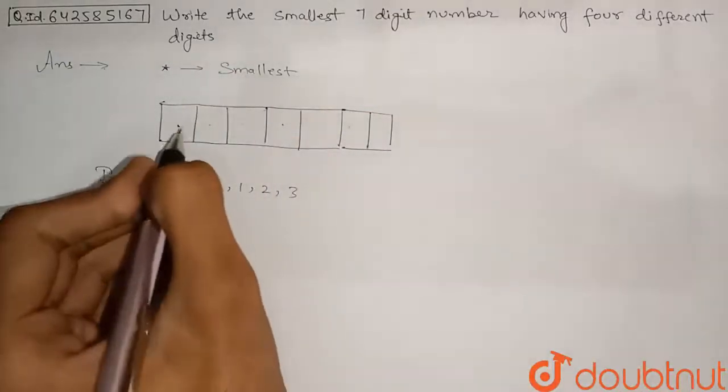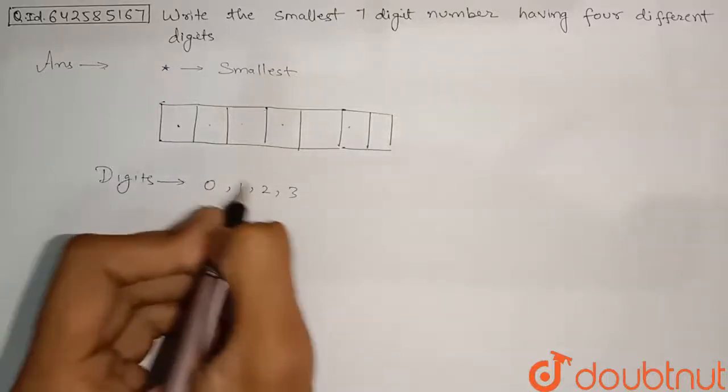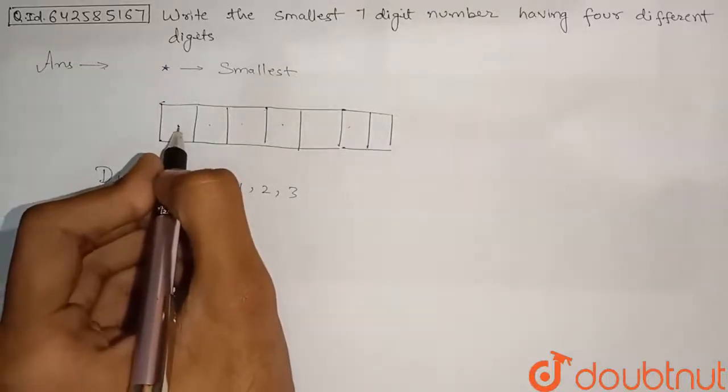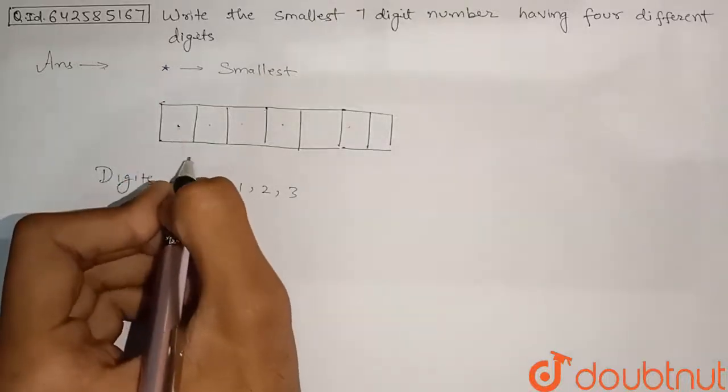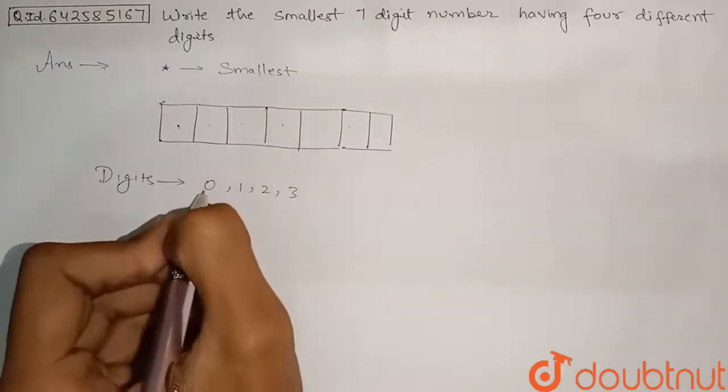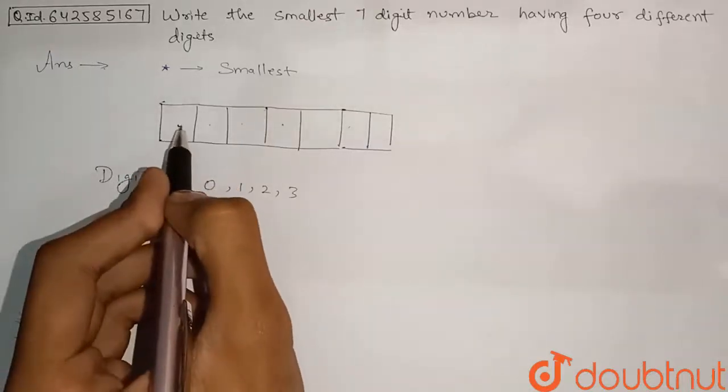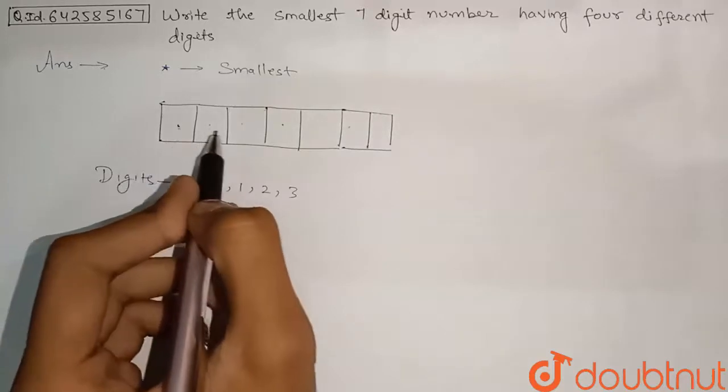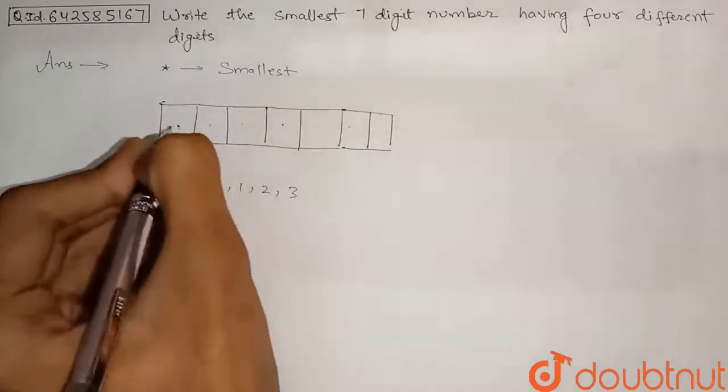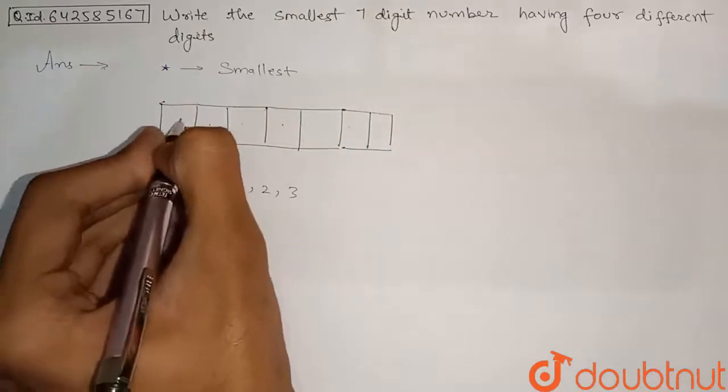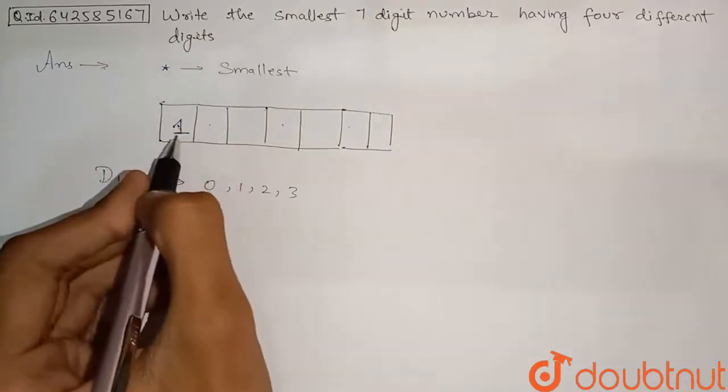Now we have to just put a digit out of these 4 digits into this first block, and we have to take the smallest digit. Now 0 cannot be that digit because if we will just put 0 here, then we have a 6 digit number only. So we can just write 1 here. So 1 will be into this box, that is the first digit of the number will be 1.